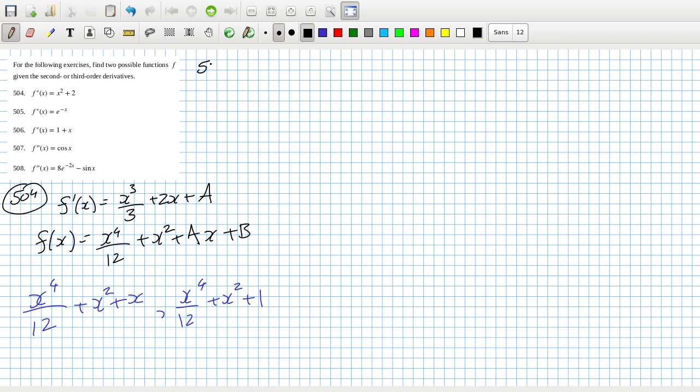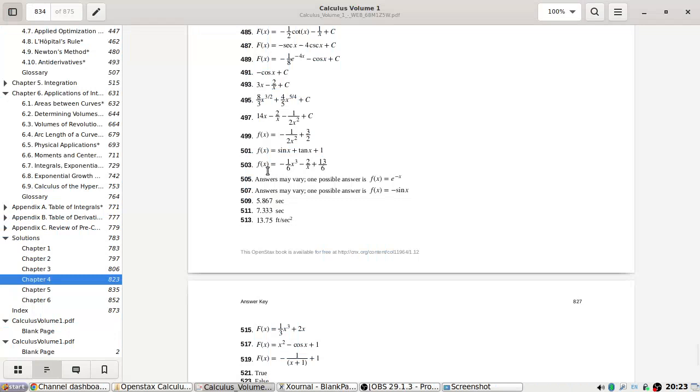Weird question. 505: if you anti-differentiate this twice you'll end up with, well once would be minus e minus x and then again will be e minus x. So you could have e minus x as one possibility or e minus x plus one I guess. Really, is that all we have to say here?